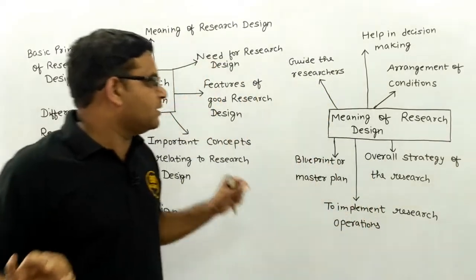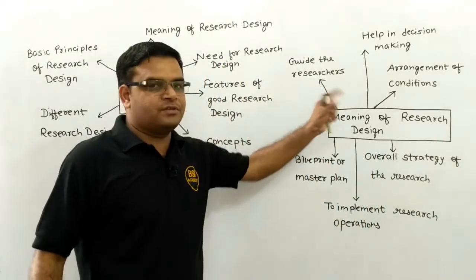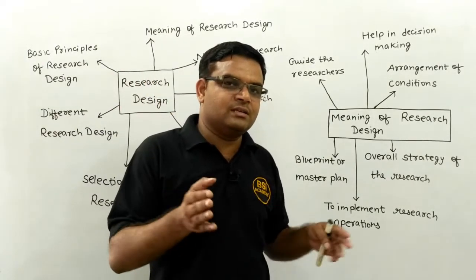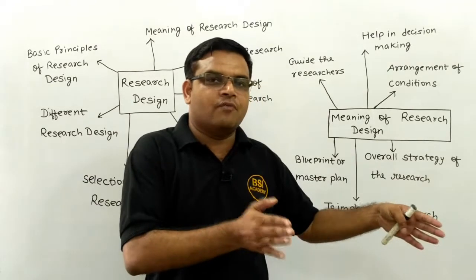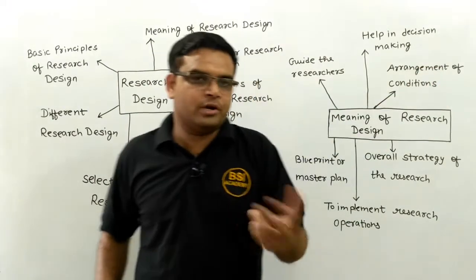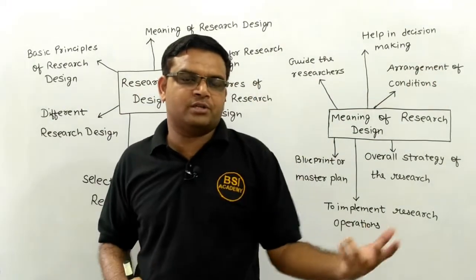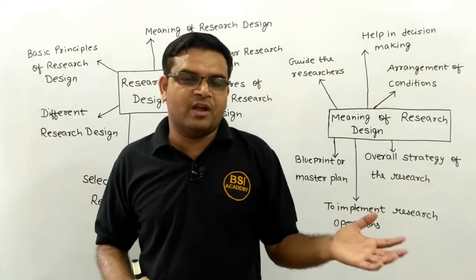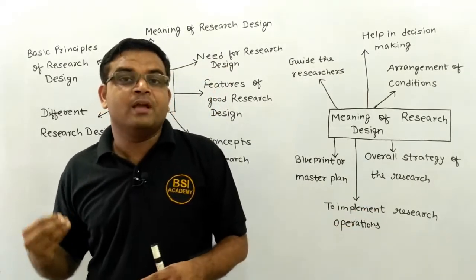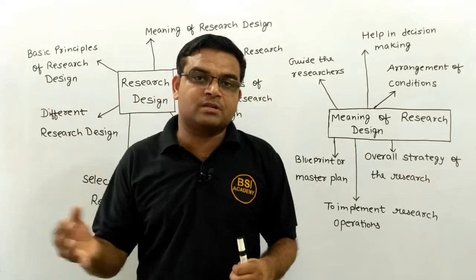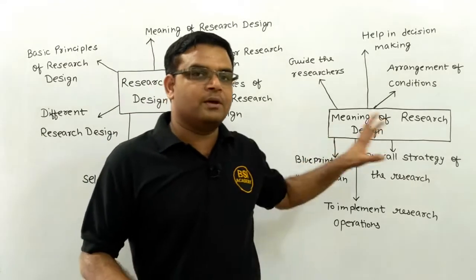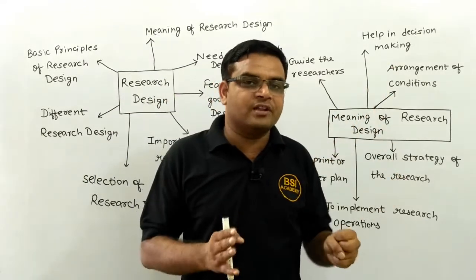The first point is: what is the meaning of research design? As its name suggests, it is the designing of research. It is nothing but the arrangement of conditions. If one strategy or one alternative fails for your research, then what are the different types of alternatives, strategies, conditions, or problems that come under the category of our research? So all these are nothing but the arrangement of conditions, and different types of testing plans we adopt in our research plan.